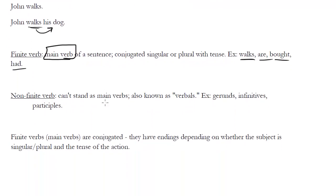Now you can contrast the finite verb with the non-finite verb. These cannot stand as main verbs. They cannot stand by themselves in sentences and carry the action of a sentence. They can't be part of a predicate in the way a main verb can. They're also known as verbals. There'll be a whole video later on verbals, but some examples include gerunds, infinitives, and participles. And again, we'll talk more about that later.